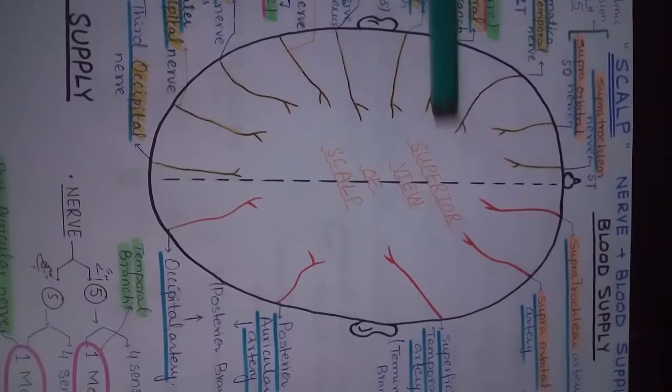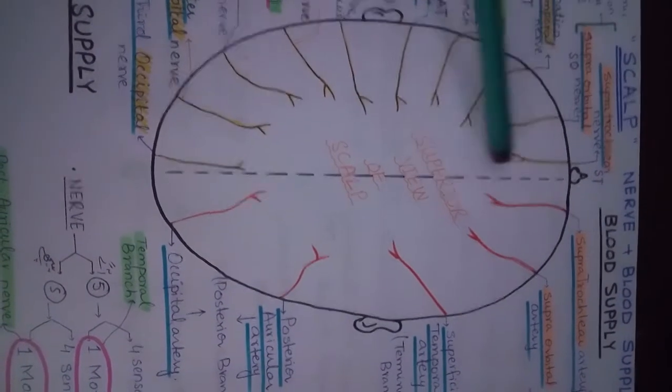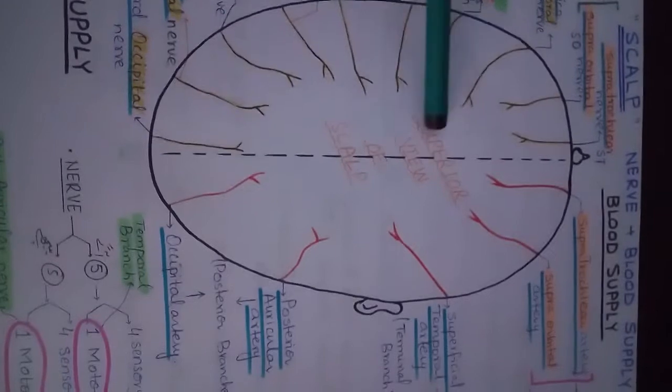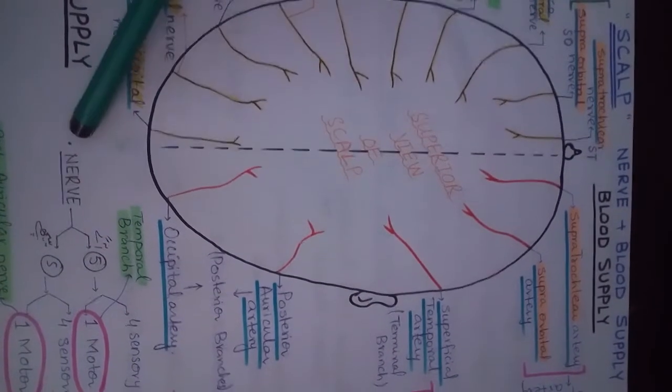First, I will explain the scalp anatomy. This is the superior view of the scalp. The nose will be anterior, the right and left sides are lateral, and this is your posterior side.